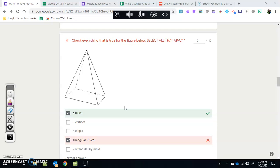This one says check everything that is true for the figure below. Select all that apply. Most people have been getting the faces right - the faces are the flat edges. Now vertices are the corners. For this shape, there's one up here and then four on the bottom in each of the corners, so that's five vertices. This person was correct to not check this one. Now edges are the straight lines. This one has one, two, three, four, and then on the bottom there's five, six, seven, eight. So there are eight edges. We should have checked this box.